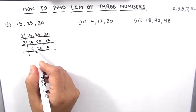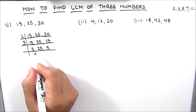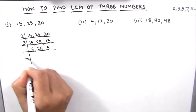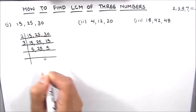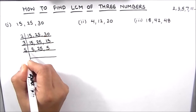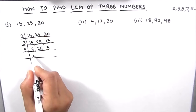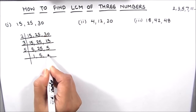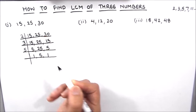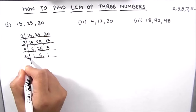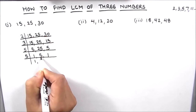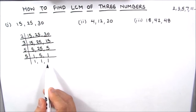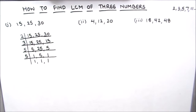Now we have 5, 25 and 5, and all the three numbers are divisible by 5. So we will use 5 as a prime factor. 5 times 1 is 5, 5 times 5 is 25 and 5 times 1 is 5. Then we divide 5 by 5: 5 times 1 is 5. Now all the three numbers are fully divided.